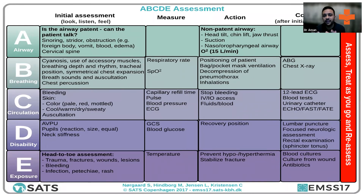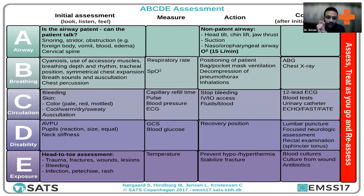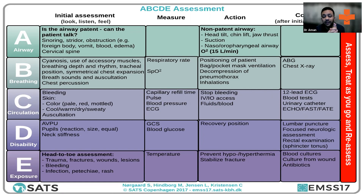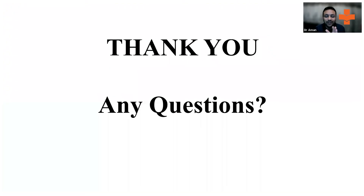In the UK, exposing the patient takes priority because you're trying to save their life. But in India there are complexities around patient privacy — don't expose them in front of ten people, maintain dignity. Take consent where possible before exposing. In the disability part, do a focused neurological assessment and a rectal examination if possible. In the UK we see a lot of cauda equina syndrome, which we rarely saw in India — so rectal examination is a very important part of making a differential diagnosis.